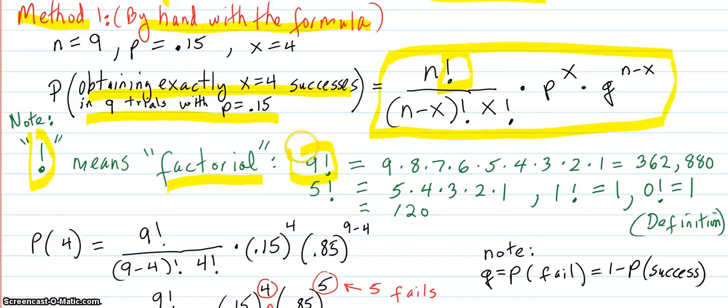Method one, which is by hand with the formula. The probability of obtaining exactly four successes in nine trials with the probability of 0.15 each time is this formula, the binomial distribution probability formula. And you see this exclamation point. Well, that doesn't mean we're excited about the math, although we might be. This means factorial in math.